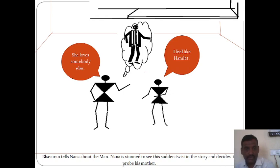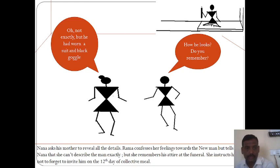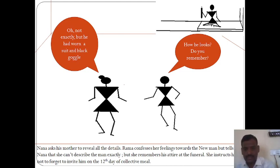Nana feels like Hamlet because, as in the story of Hamlet, immediately after Hamlet's father's death, his mother married the uncle. Baurav tells Nana about the man. Nana is also surprised at this sudden twist and decides to investigate his mother. Nana asks Rama to reveal all the details. Rama confesses her feelings towards the new man but says she can't describe him exactly, though she remembers his attire at the funeral. She instructs Nana not to forget to invite him on the 12th day collective meal.